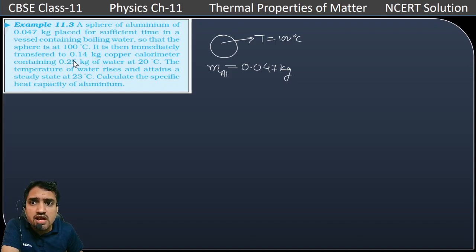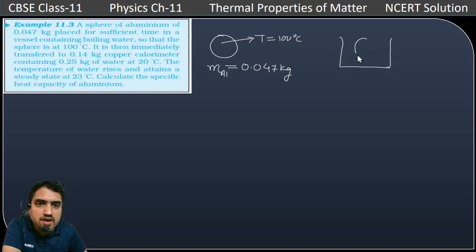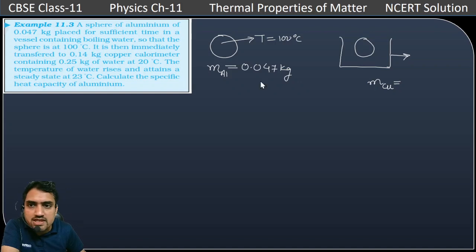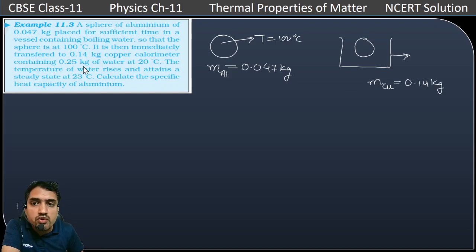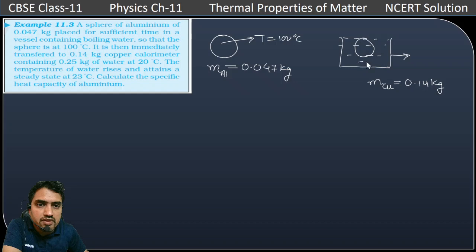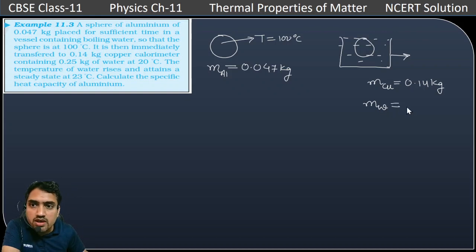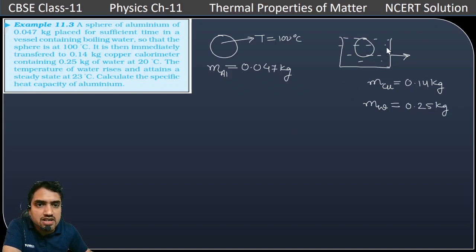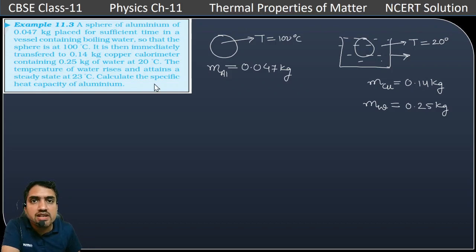The sphere is then immediately transferred to a 0.14 kg copper calorimeter. The mass of this calorimeter is equal to 0.14 kg, and it contains 0.25 kg of water at 20 degree Celsius. The mass of the water is equal to 0.25 kg.